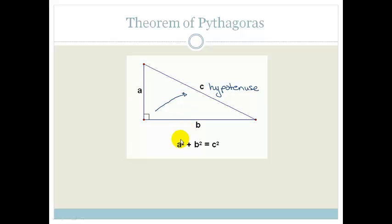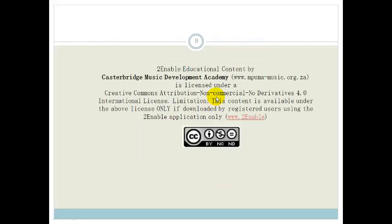That means also that we can get one of the other two sides by saying A squared is equal to C squared minus B squared, or we can say that B squared is equal to C squared minus A squared. So that basically is all the theory you need to know about your triangles.